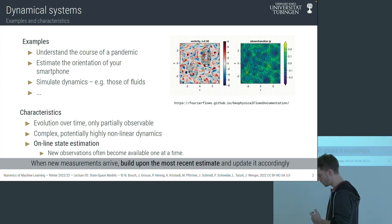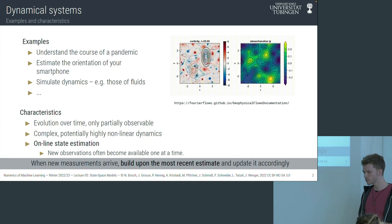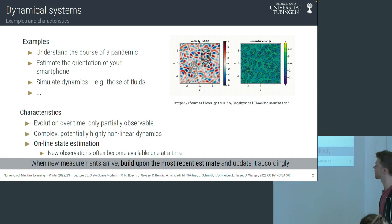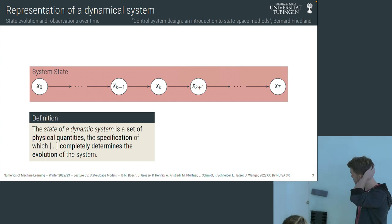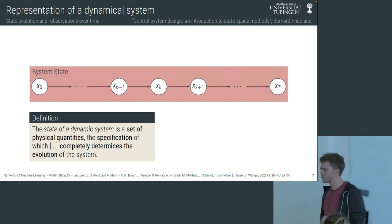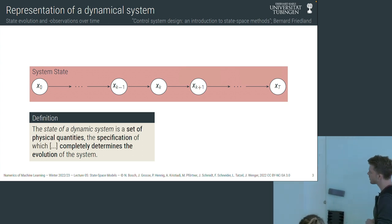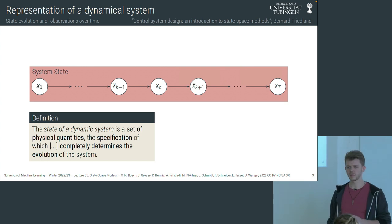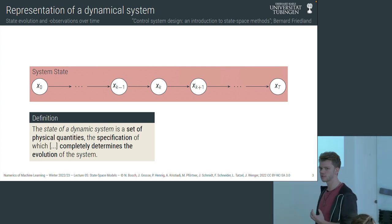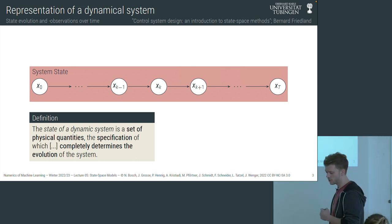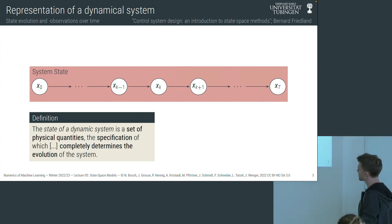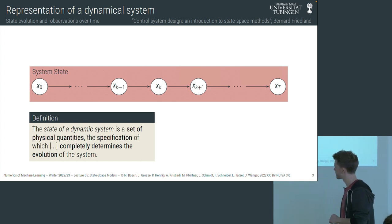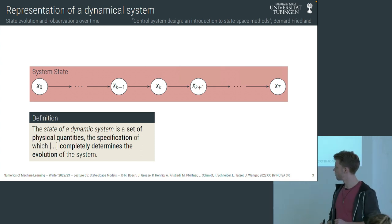Now let's look at a graphical representation of the modeling language we choose — a figure you saw in the very first lecture. In the red box you see a sequence of white nodes representing random variables modeling our system state. What is a system state? I chose one definition: the state of a dynamic system is a set of physical quantities whose specification completely determines the evolution of the system.